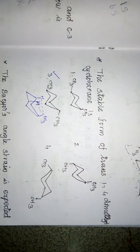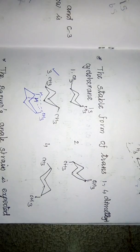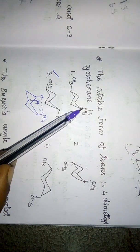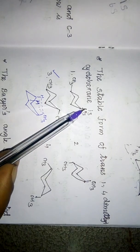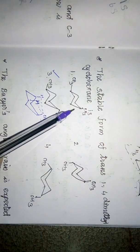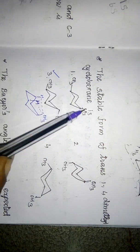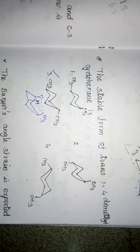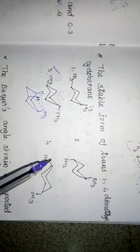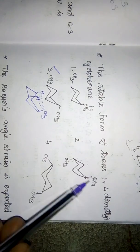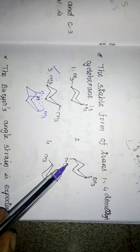For trans-1,4-dimethylcyclohexane, both substituents should be either both axial or both equatorial. In option 1, the first methyl group is axial and the fourth is equatorial — an axial-equatorial combination at 1,4 gives a cis form, not a trans form. In option 2, both methyl groups are in the axial position, which is a trans form.